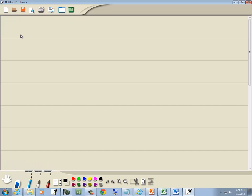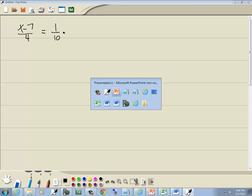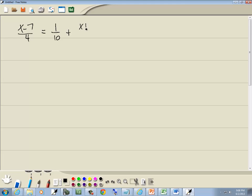Let's solve this linear equation. We've got x minus 7 over 4 equals 1 tenth plus x plus 3 over 20.